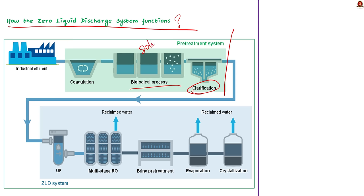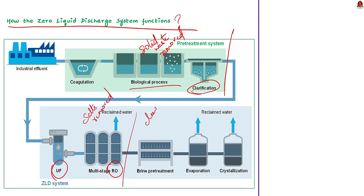Then there is the filtration process. This process includes reverse osmosis (RO), ultra filtration (UF), and nano filtration (NF). This is done to remove even the tiniest solid waste from the water. Even the salts dissolved in the water are removed through RO and NF. After the filtration process, the clean water without any solid waste or dissolved salts is taken out and reused.